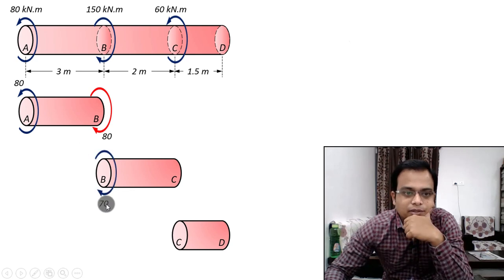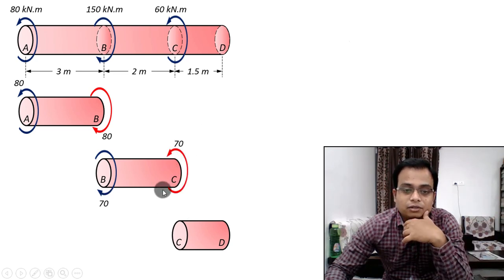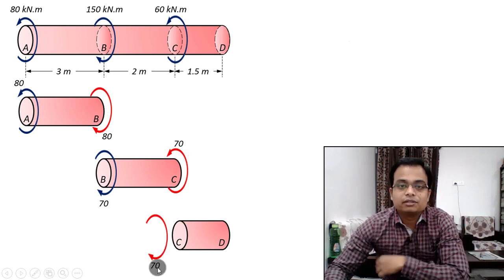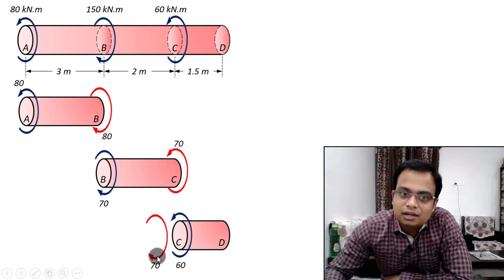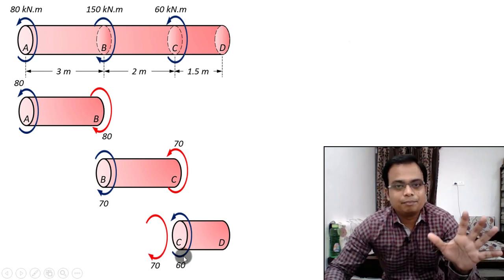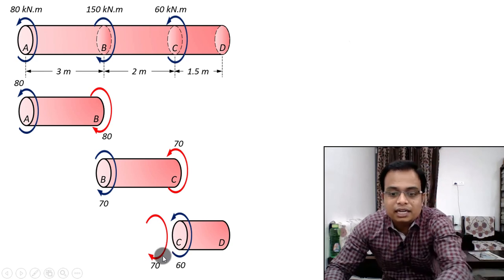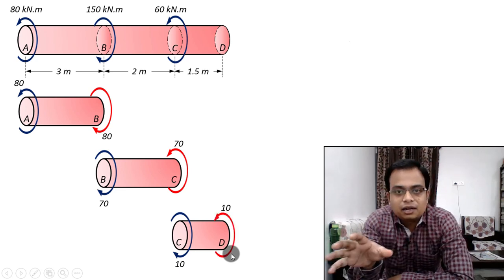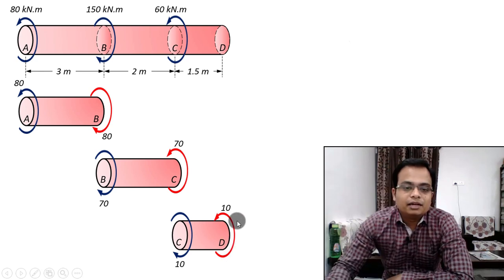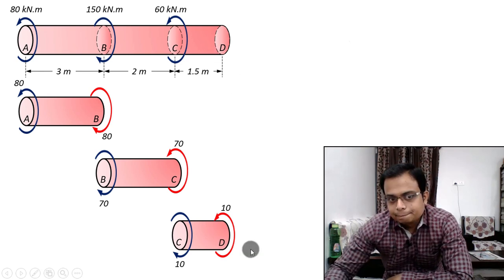Balance the 70 kNm clockwise with 70 kNm anti-clockwise. At cross section C, there is already a torque of 60 kNm anti-clockwise. So comparing 70 clockwise and 60 anti-clockwise, 70 is larger, and 70 minus 60 gives a resultant of 10 kNm in the clockwise sense. That's the torque in portion CD. At the fixed end, the remaining 10 kNm is what the wall reaction provides.